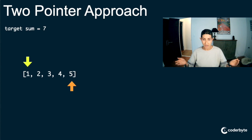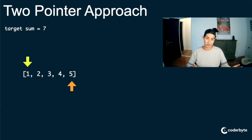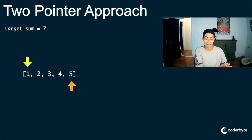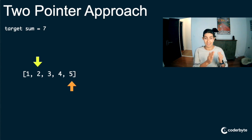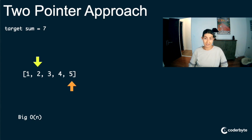In this case it's 5 and 1, which makes 6. Because 6 is less than 7, we know we need to move this pointer up because we're going to need a larger number combined with 5. If we moved the right pointer down, we would just get further away from 7. So 5 plus 1 equals 6 — less than 7 — so we move our left pointer up and we have 5 and 2. That's Big O of N, significantly better than N squared.